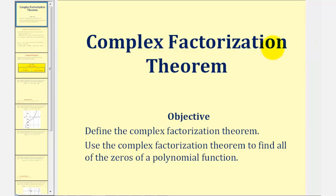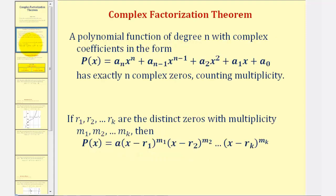Welcome to a lesson on the complex factorization theorem. In this lesson we'll define the theorem and then use it to find all the zeros of a polynomial function. A polynomial function of degree n with complex coefficients has exactly n complex zeros, as long as we count multiplicity. So we're not just talking about real zeros — we're talking about complex zeros, and the number of complex zeros will always match the degree of the polynomial.